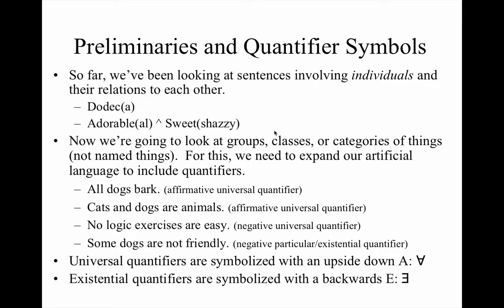We're talking about the domain of things that are dogs in relation to things that bark — every one of them, hence the universal. The same goes for dogs and cats. In neither case are we naming this or that dog or this or that cat. Moreover, we're not naming a specific animal. So what we're doing in quantifier logic is dealing in generalities, and there's a logic that goes with this notion.